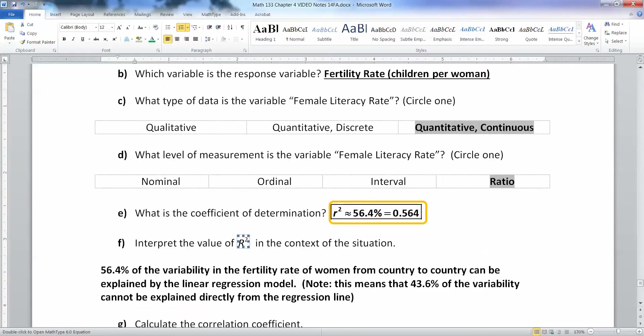So we have 56.4%. Alright. Now, how do we interpret that value? Well, remember, there's that formal interpretation language from section 4.3, which is that 56.4% of the variability in the fertility rate of women from country to country can be explained by that linear regression model or that least squares regression line, that line of best fit. So that line that the computer finds, it explains 56.4% of the variability, the up and down of fertility rate that we see from country to country. Note that that means that 43.6% of the variability, we're not really sure why it's happening. It's happening because of a whole variety of factors that our data set is not capturing.